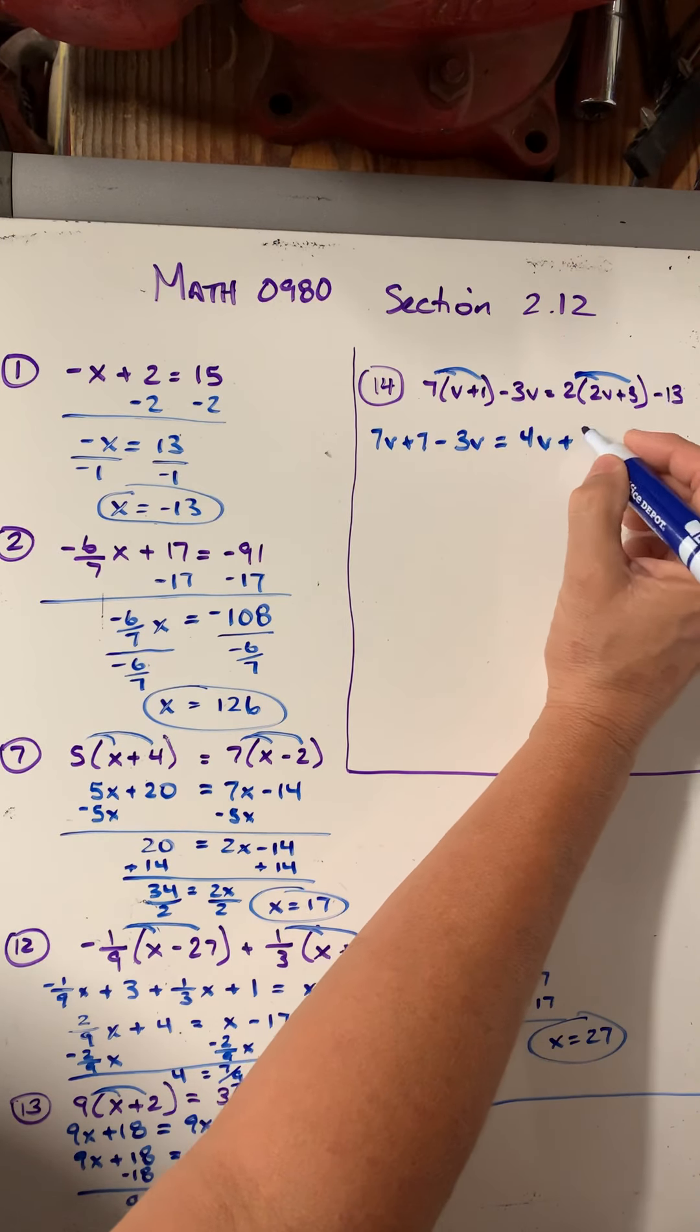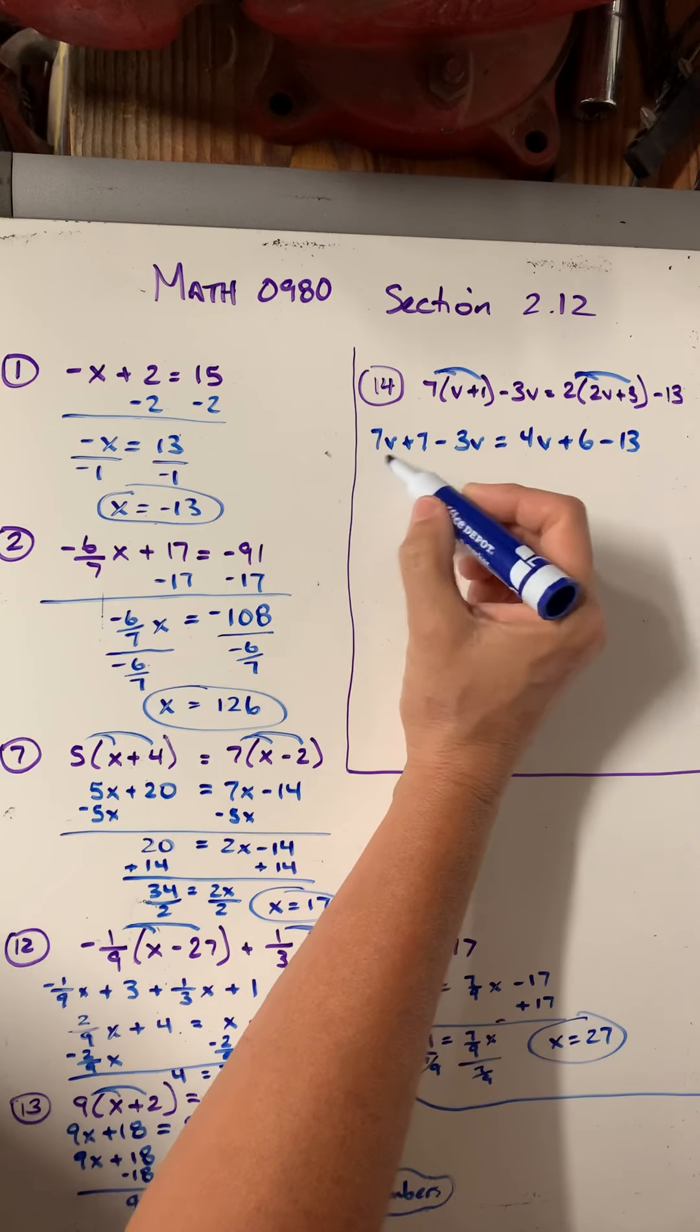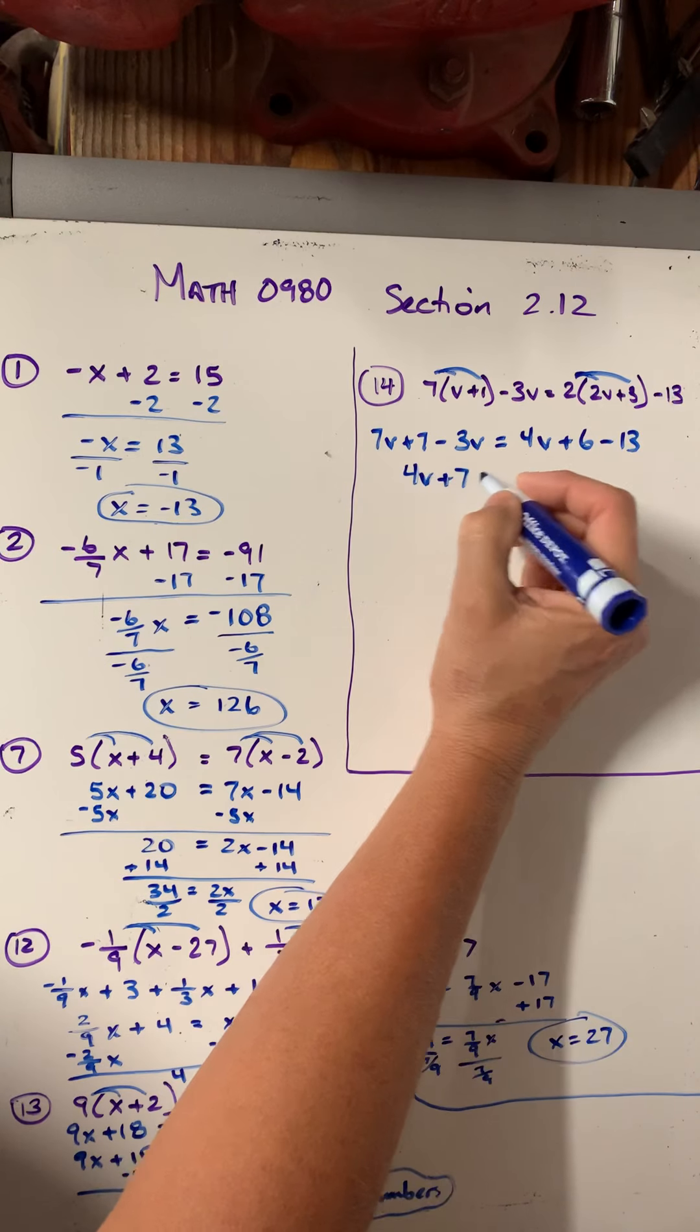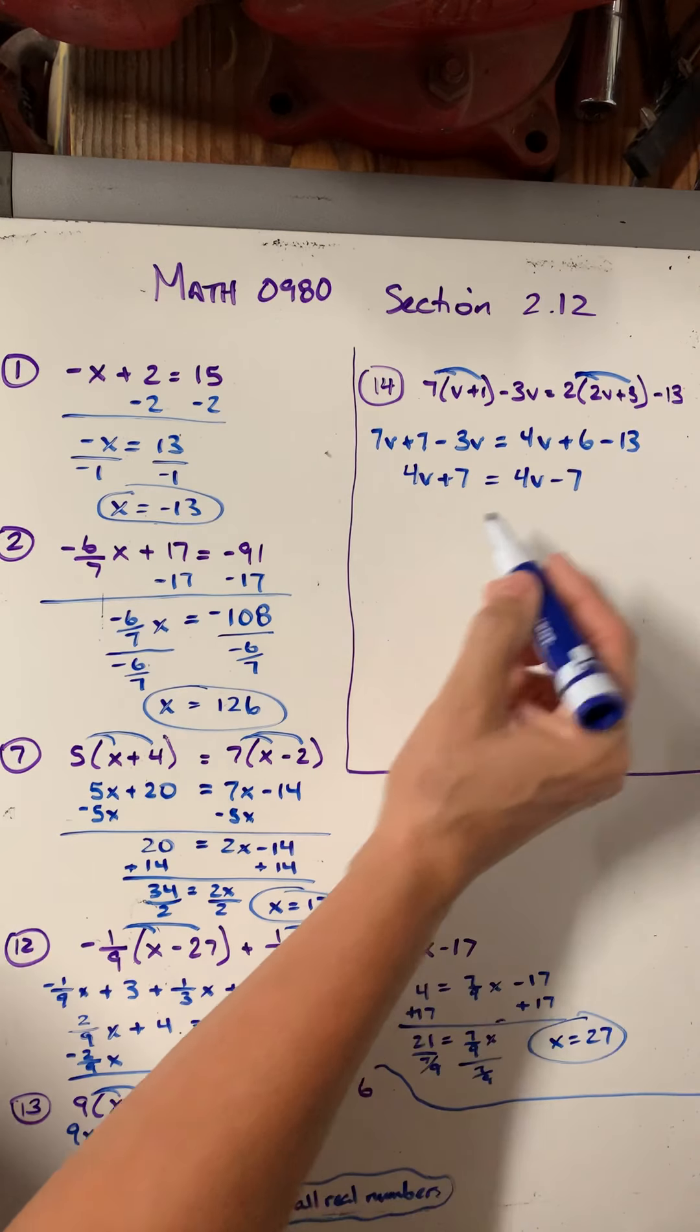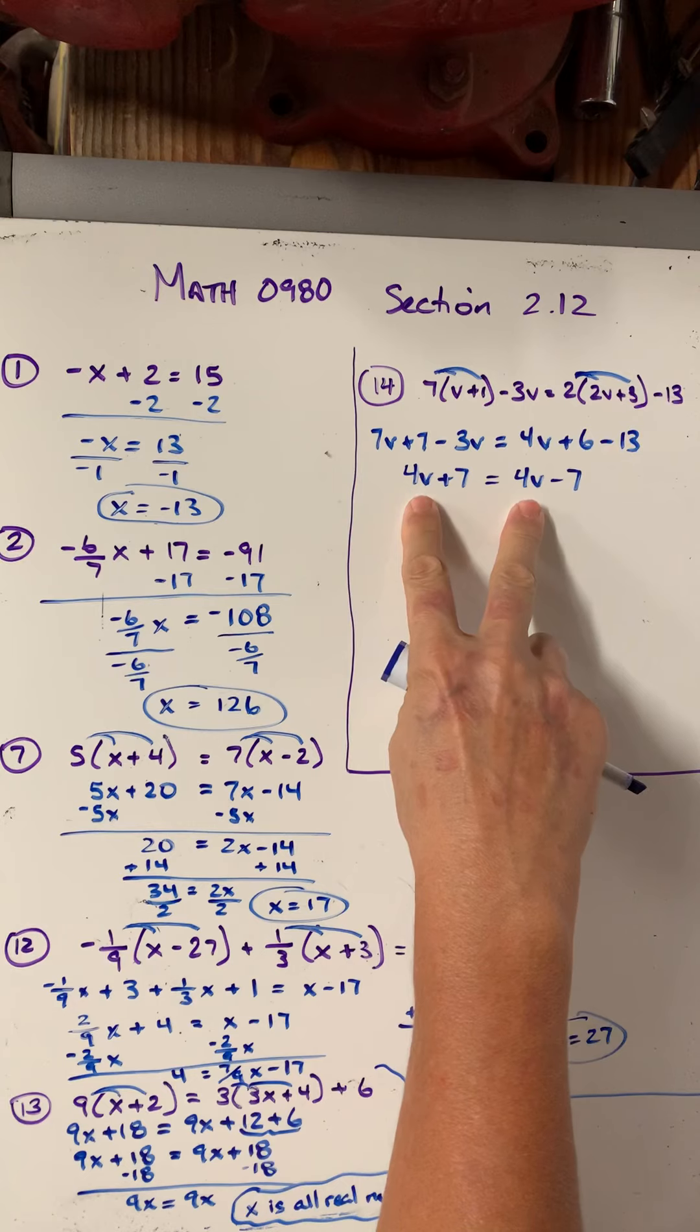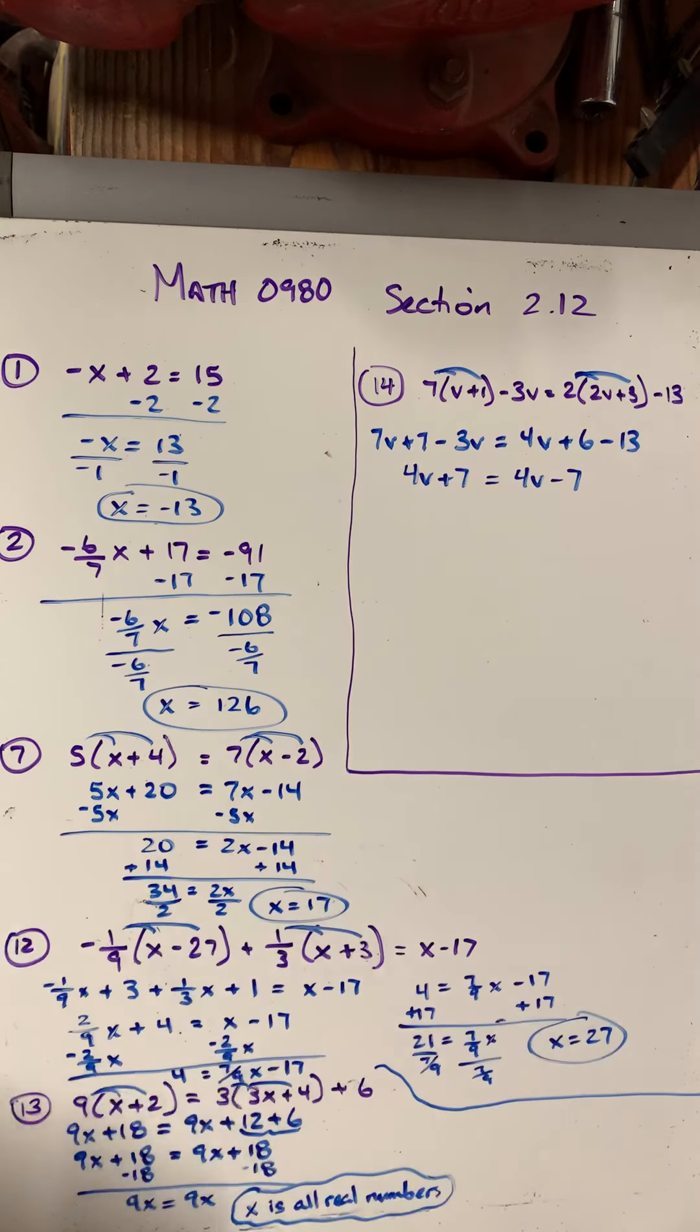So I get 7v plus 7 minus 3v equals, distribute that, 4v plus 6 minus 13. I'm going to combine like terms on this side, 7v minus 3v is 4v plus 7. Here 6 minus 13 is minus 7. So at this point, you might be able to recognize what's going on. You have 4v regardless. In this case, I'm going to add 7. In this case, I'm going to subtract 7.